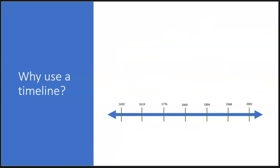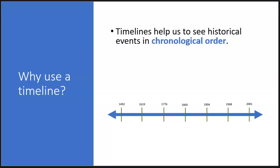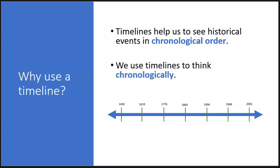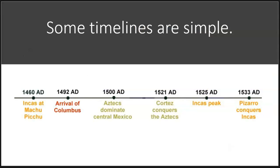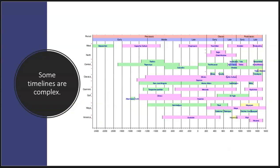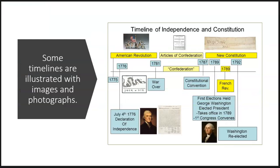So why use a timeline? Timelines help us to see historical events in chronological order. It's a picture, so it helps us to see, and that way we can study and learn about which events happened first and next. We use timelines to think chronologically, and that's a very important skill. Many history textbooks use timelines to show events in chronological order. Some timelines are really simple, others are complex with a lot of information, and some in the middle have pictures and text that really help us understand history.